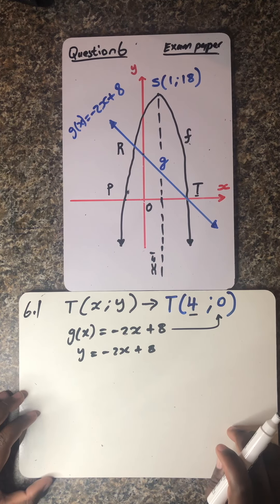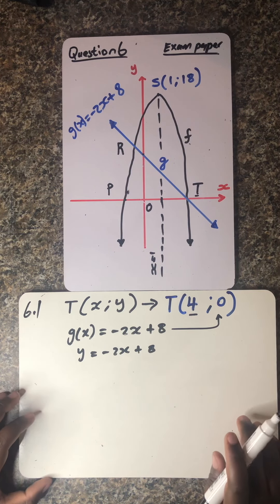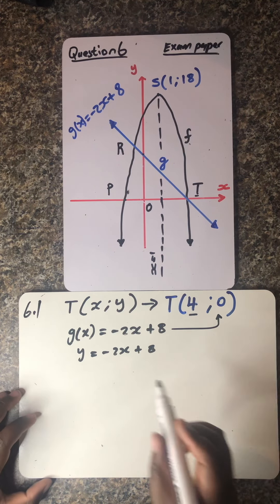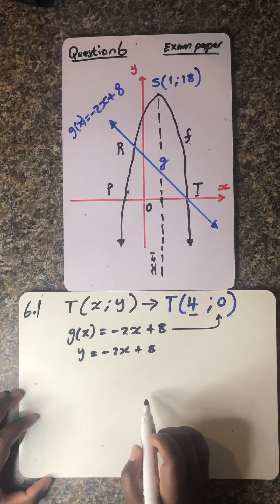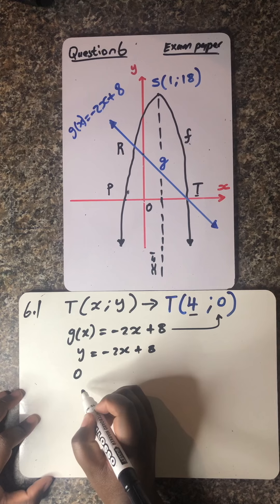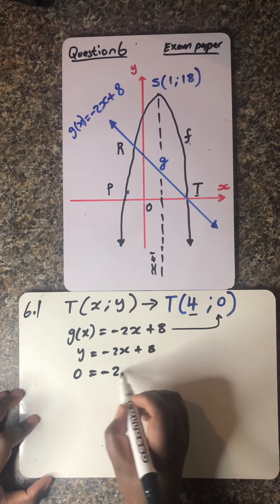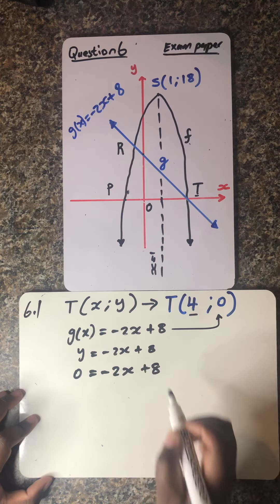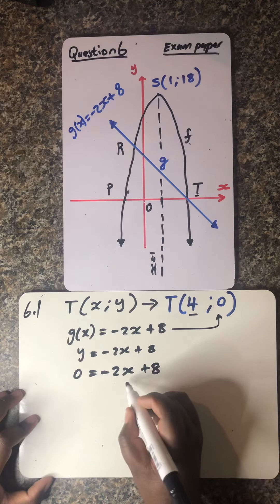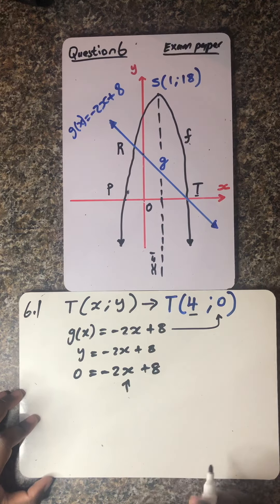y is equals to negative 2x plus 8. So ladies and gentlemen, what we need to do is obviously to substitute what we know. We know y is equals to 0 minus 2x plus 8. What we don't know is that x value over there.